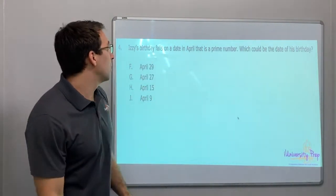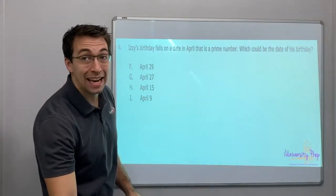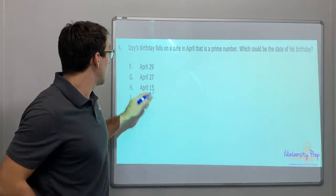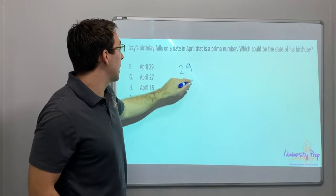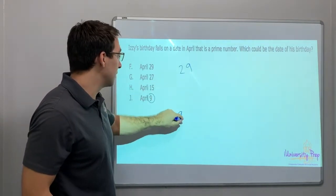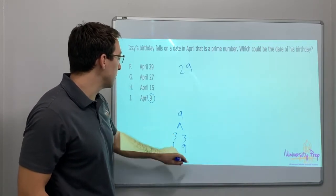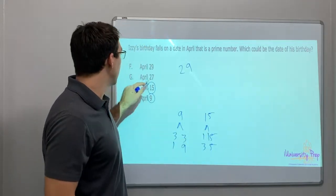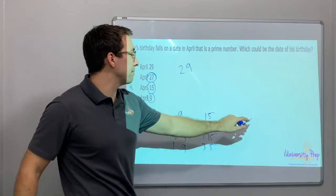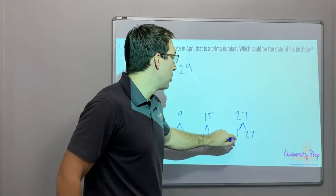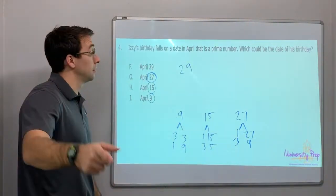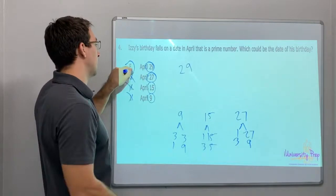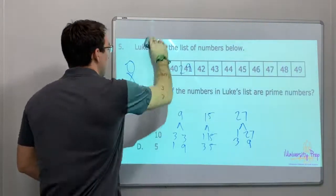Izzy's birthday falls on a date in April that is a prime number. What could the date of her birthday be? 9 is not prime (3 times 3). 15 is not prime (3 times 5). 27 is composite (1 times 27, 3 times 9). So it's the 29th — answer F.